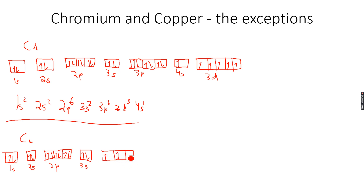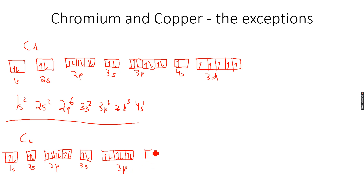Continuing to fill: 1, 2, 3 in 2p — now we are left with 14. Then 1, 2, 3 in 3s and 3p — now we are left with 11. Now we come to 4s because 4s fills before 3d.